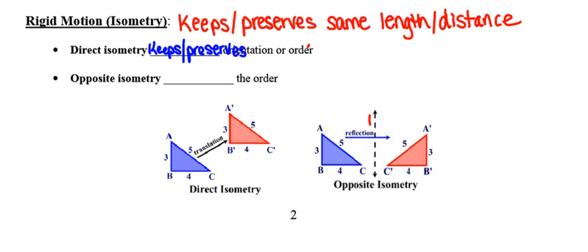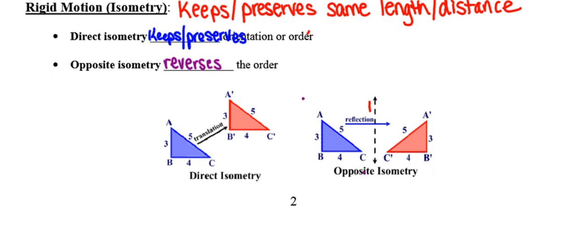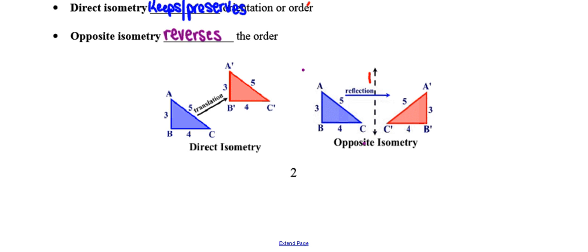So where a direct isometry keeps the orientation the same, an opposite isometry reverses the direction or the order. And I'm going to talk a little bit about what that means here using the pictures down at the bottom of page two. So if you take a look at the triangles, in each of these, the blue represents the original or the pre-image. The red represents the image or where we end up after the transformation has occurred.